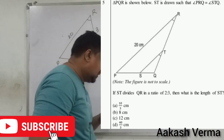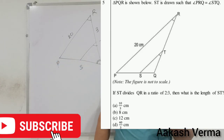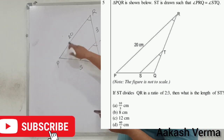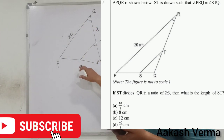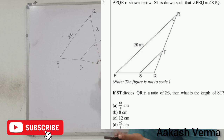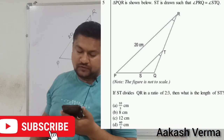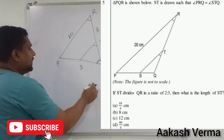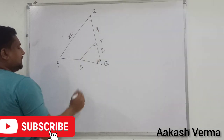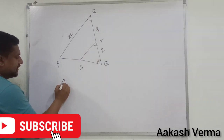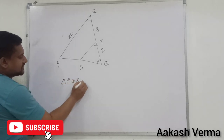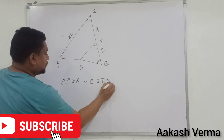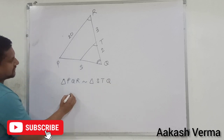Question number 5: Triangle PQR is shown below. ST is a line segment such that angle PRQ equals angle STQ. These two angles are equal, and ST divides the segment in ratio 2:3. You have to find the value of ST. Triangle PQR is similar to triangle STQ.